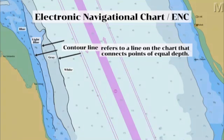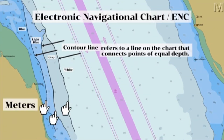The depth sounding shown in this ENC is in meters. The contour lines that you can see in this chart show an equal depth in meters. Contours are shown at regular intervals depending on the availability of the ENC. Some ENC contours are available from 2 meters, 5, 10, 15, 20 meters, and so on.